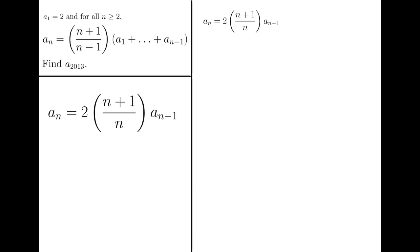By rewriting, I will have a_{n-1} equals 2 times n over (n-1) times a_{n-2}. If I put this into the equation above, then I will have a_n equals 2 times (n+1) over n times 2 times n over (n-1) times a_{n-2}. Then I will have 4 times (n+1) over (n-1) times a_{n-2}.